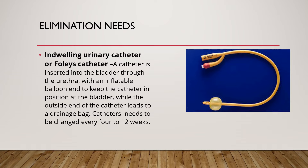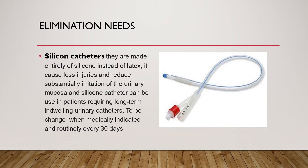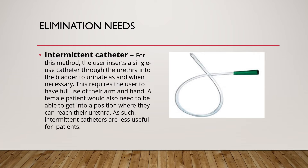The indwelling catheter needs to be changed every 4 to 12 weeks. Silicone catheters are made entirely of silicone instead of latex; they cause less injury and substantially reduce irritation of the urinary mucosa, and can be used in patients requiring long-term indwelling urinary catheterization, changed when medically indicated and routinely every 30 days. Intermittent catheter: the user inserts a single-use catheter through the urethra into the bladder to urinate as and when necessary. This requires full use of the arms and hands; a female patient would also need to reach their urethra, making intermittent catheters less useful for some patients.